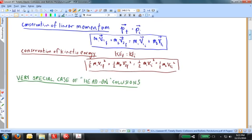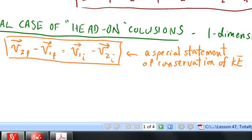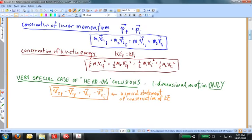First, let's define what we mean by a head-on collision. We have two objects moving in one dimension, and after the collision, those two objects are still moving in one dimension. If you write conservation of kinetic energy for the special case of a head-on or one-dimensional elastic collision, it reduces to a fairly simple equation: v2f minus v1f equals v1i minus v2i. That is a vector equation. To get to that point requires about four pages of algebra. I'll show you, just quickly, a derivation that someone else has done, and then we'll come back and do an application.